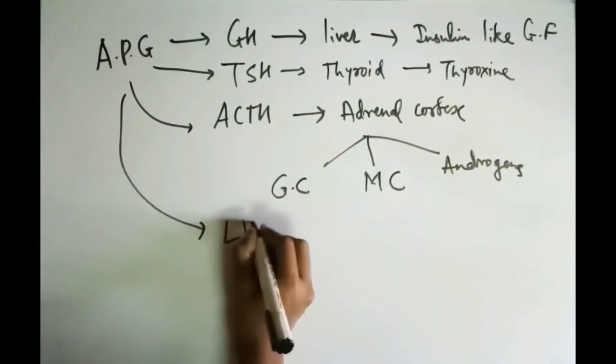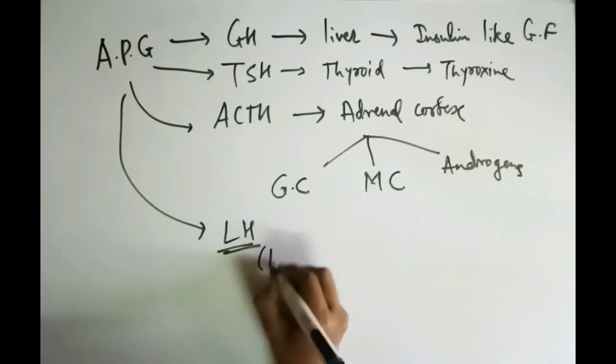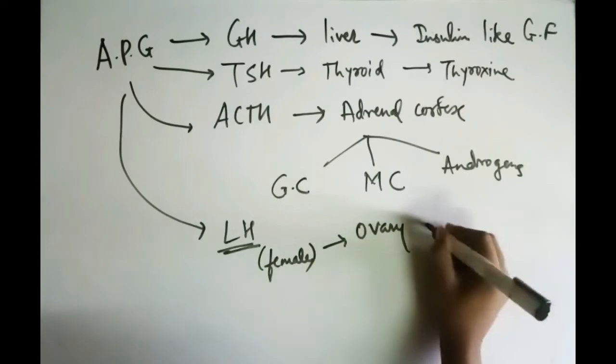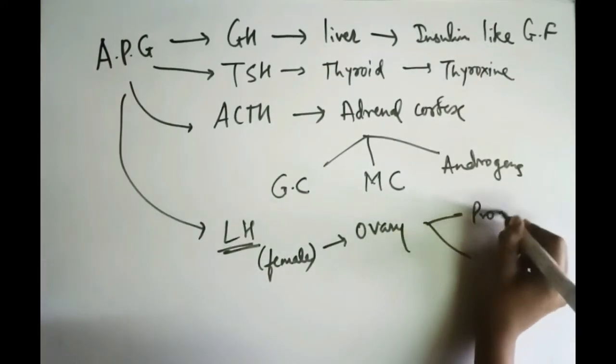Fourth type is LH that is luteinizing hormone. In females it is released from ovary and it releases progesterone.